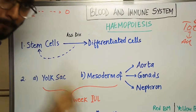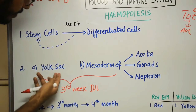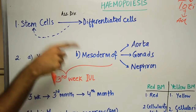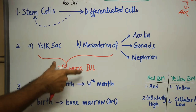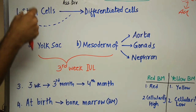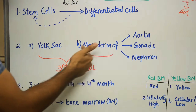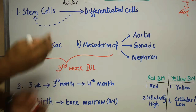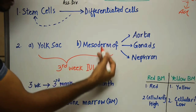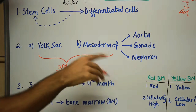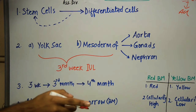Pluripotent stem cells first appear in the yolk sac at about the third week of intrauterine life. The yolk sac is an embryological structure and is the first site of hemopoiesis. Simultaneously, at about the third week, pluripotent stem cells also appear in the mesoderm of the aorta, gonads, and nephron. Mesoderm is the middle of the three germ layers (ectoderm, mesoderm, endoderm), and these structures also show hemopoietic activity.